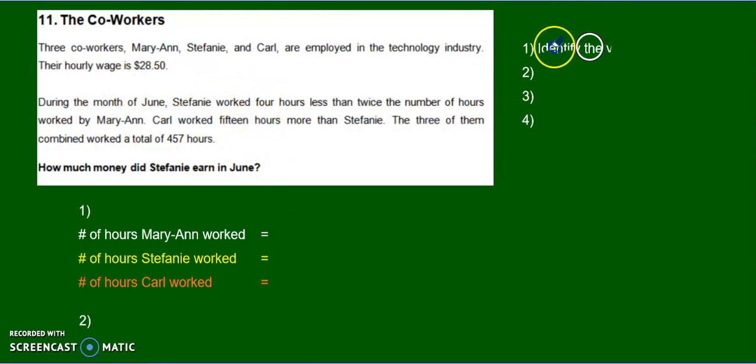The first one is to identify the variables. Once we have the variables, we have to write the equation. And what do we do with an equation once we write it? Well, we solve it. We solve the equation. And then we check our answer. We write our answer.